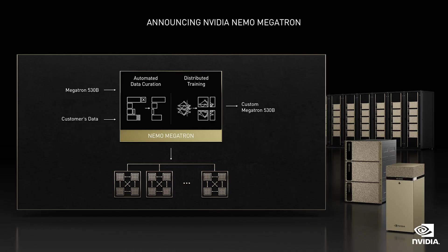With Nemo Megatron, any company can train state-of-the-art large language models. Once trained, how do we run these large language models? Inference response time has to be sufficiently fast to be useful. On a high-end dual Xeon Platinum CPU server, inferencing Megatron 530B takes over a minute — for many applications, that's basically unusable. GPU accelerating these models is also challenging because the model sizes require much more memory than a single GPU.